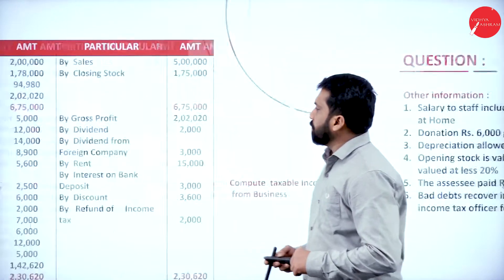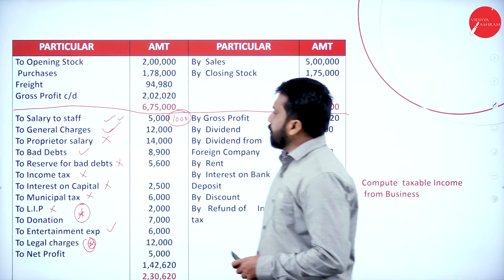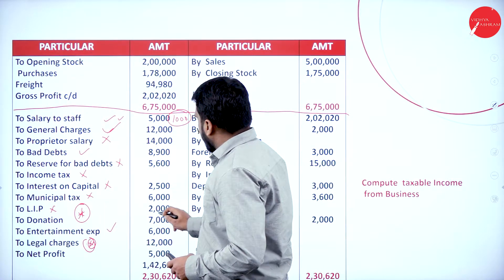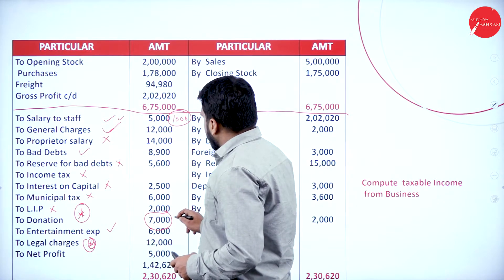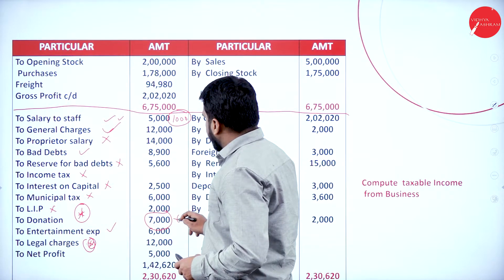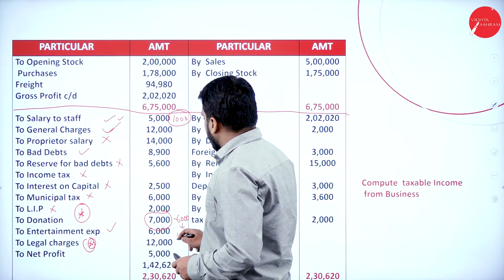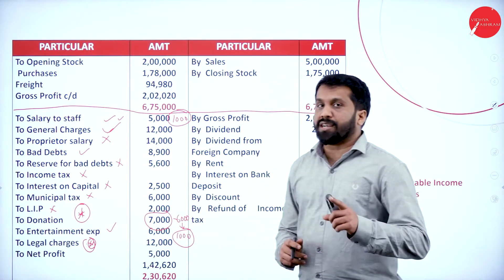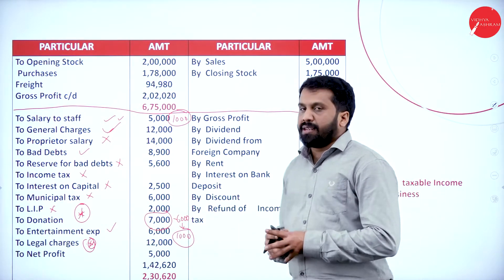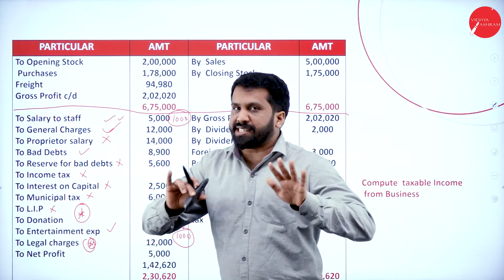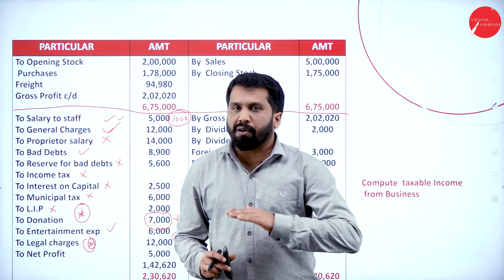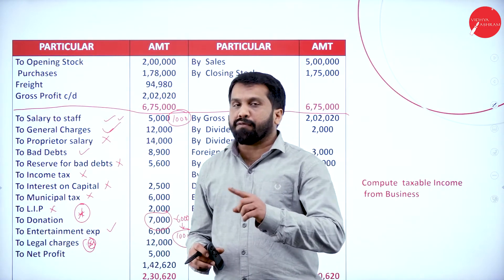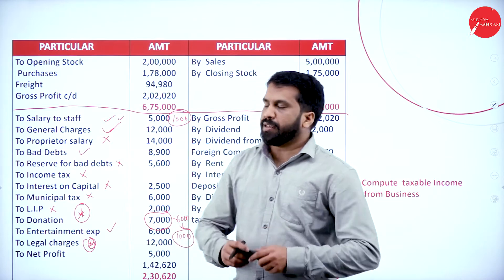Donation of 6,000 given for a trade association — trade association means business, so donation paid for it is for business purpose. Out of 7,000 total donation, 6,000 is for business. The balance 1,000 is not for business, so only 1,000 is considered as a disallowed item.